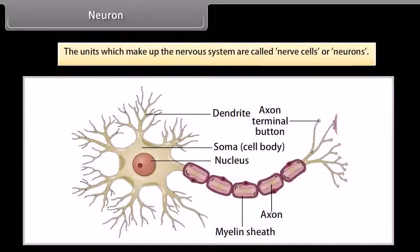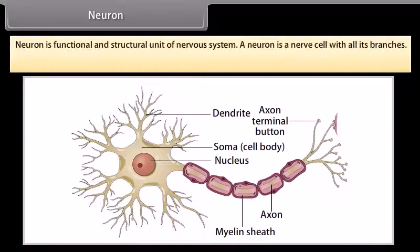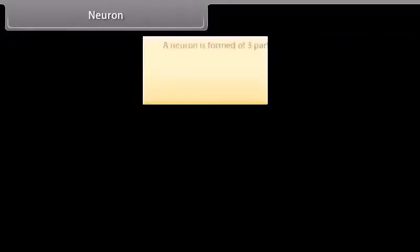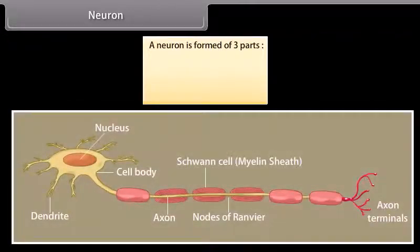The units which make up the nervous system are called nerve cells or neurons. A neuron is a functional and structural unit of the nervous system — a nerve cell with all its branches. Neuron is the longest cell in the human body and is about 100 cm long. A neuron is formed of three parts: cytone, dendrites, and axon.